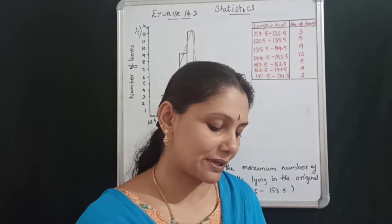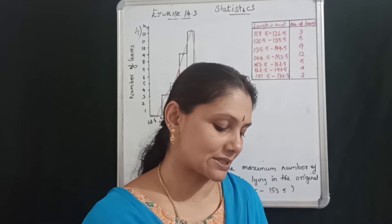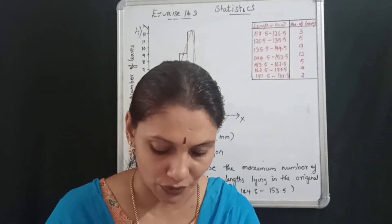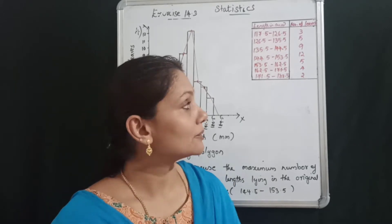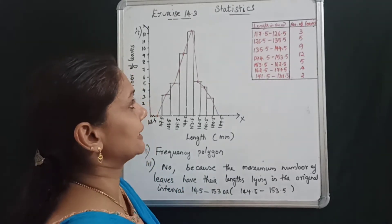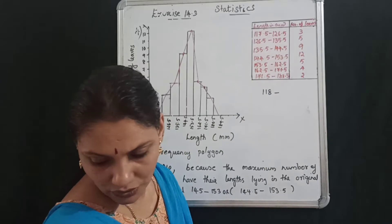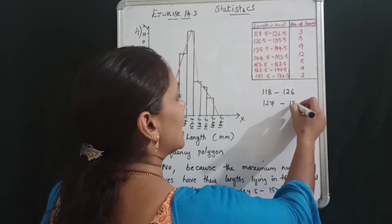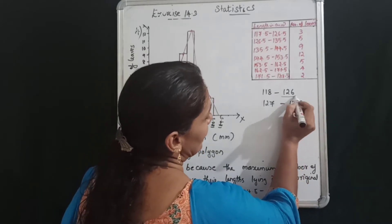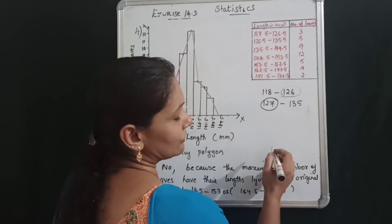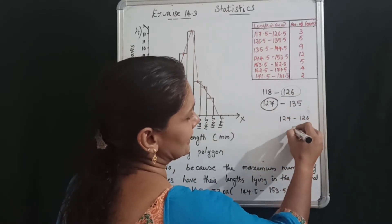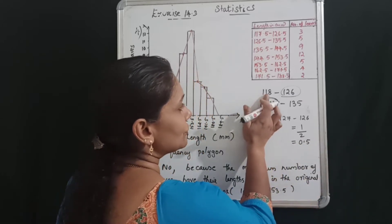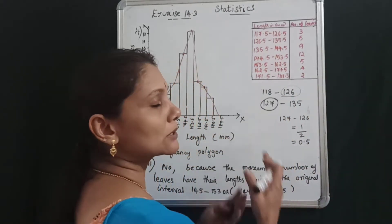The lengths of 40 leaves of a plant are measured to the nearest 1 mm and the obtained data is represented in the following table. The length ranges include intervals such as 118–126, 127–135, 136–144, 145–153, 154–162, and 163–171 mm.